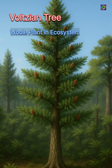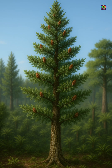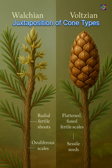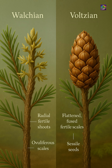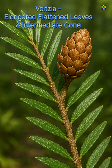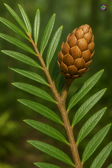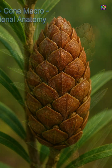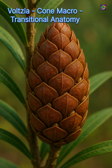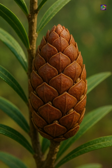Throughout the Triassic, advanced Woltzian members such as Woltzia became common elements of forest ecosystems, contributing to the restructuring of post-Permian vegetation. Woltzia displayed elongated, somewhat flattened leaves and compact cones that illustrate the intermediate condition between Paleozoic Woltzian cones and the fully integrated seed-scale complexes of Jurassic and modern conifers.